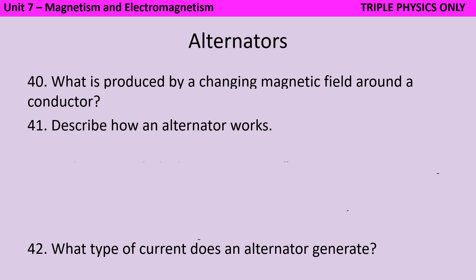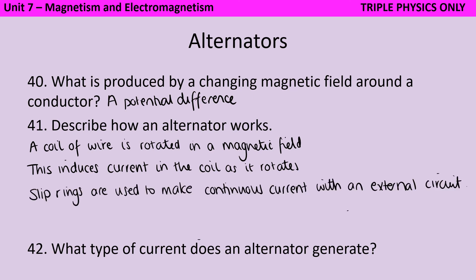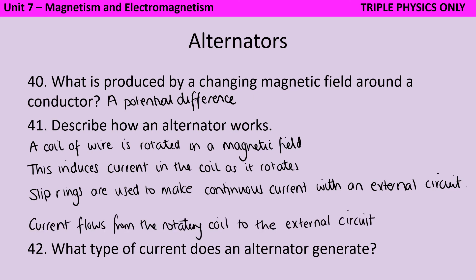When a conductor that doesn't already have an electrical current passing through it passes through a magnetic field, this does induce a current. And where a magnetic field is changing around a conductor, this can induce a potential difference. An alternator is built based on this — we have a coil of wire which is being rotated in a magnetic field. Because that coil of wire is cutting through the magnetic field, and as a wire it's a conductor, this induces current in the coil as it rotates. Slip rings are used to make sure that there is continuous current with an external circuit, and this generates alternating current.